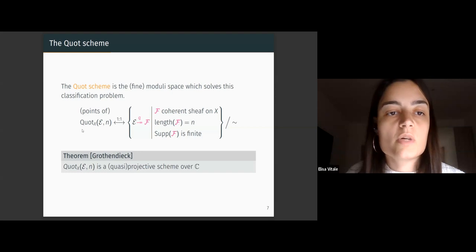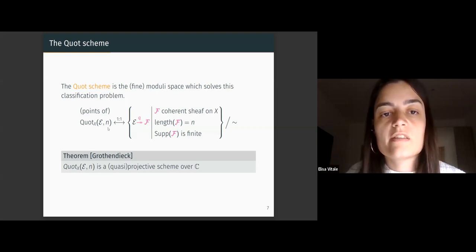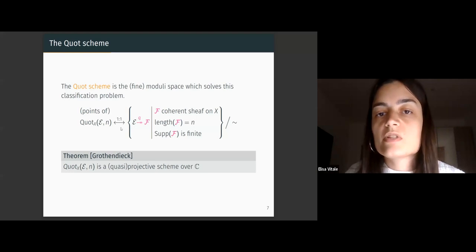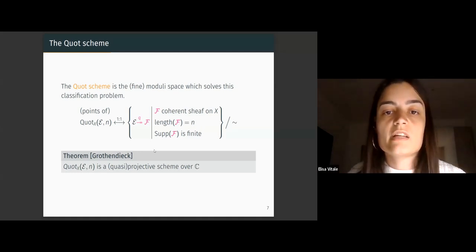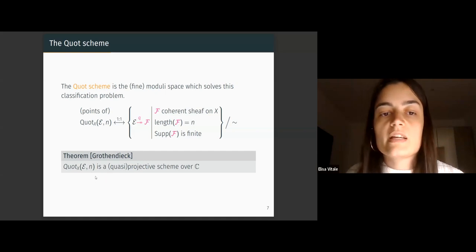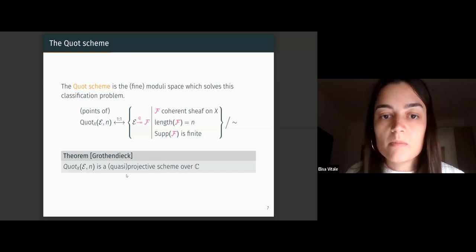Quot schemes are moduli spaces and they solve exactly this classification problem. Points of the Quot scheme — which we denote with the notation Quot with X, E, and n — are in bijection with the equivalence classes of the objects we want to classify. There is a theorem by Grothendieck that guarantees this object is indeed a quasi-projective scheme over the complex numbers.